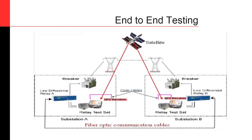The diagram you see here is what you will end up with in 90% of cases when you're doing end-to-end testing. As discussed in a previous presentation, we need to guarantee the synchronicity of the test sets. At each end of the line, you need the same things: a relay test set, some form of time synchronization, and the relay under test — whether a line differential relay, distance relay, or any relay participating in the scheme.